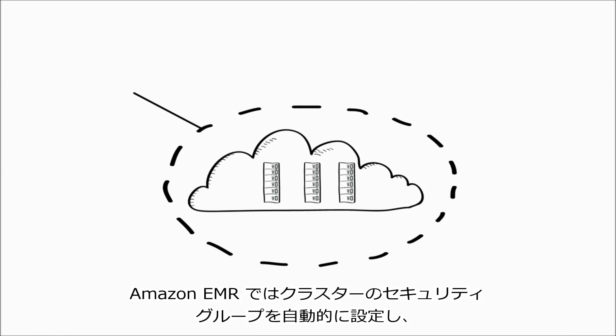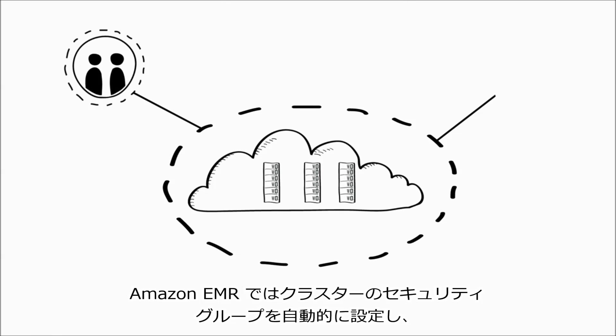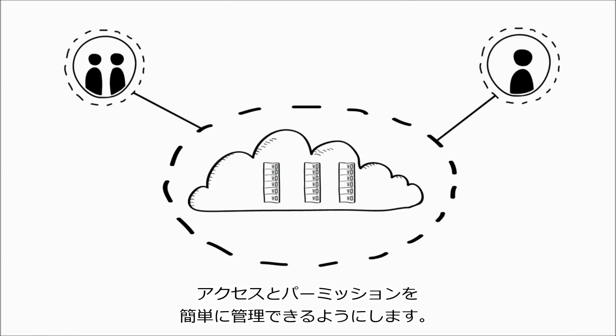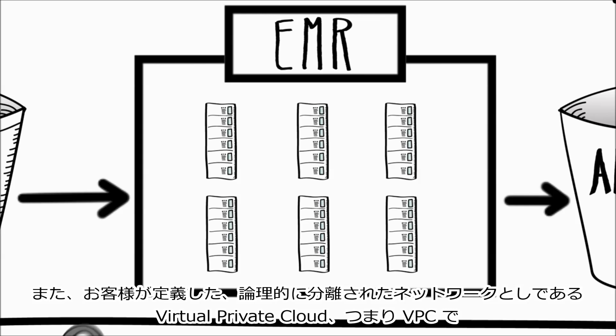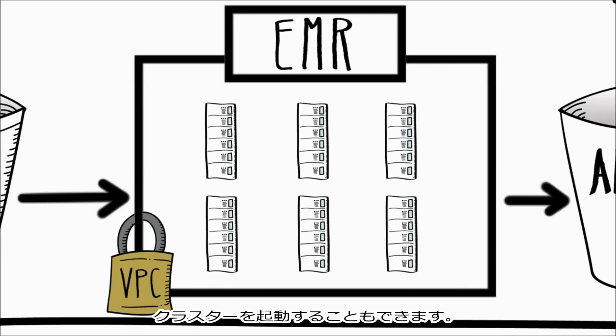Amazon EMR automatically configures security groups for the cluster and makes it easy to control access and permissions. You can also launch clusters in an Amazon Virtual Private Cloud VPC, a logically isolated network that you define.